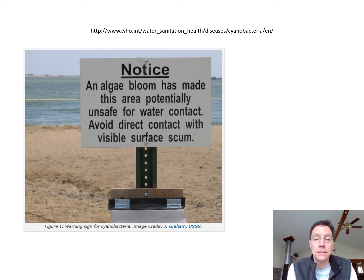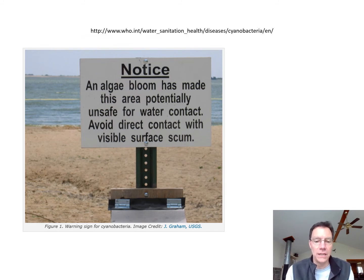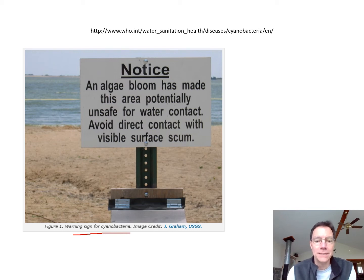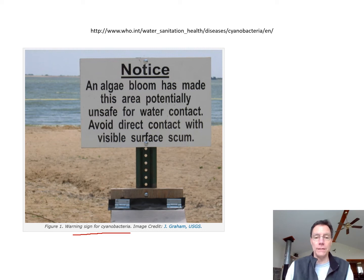Lake Erie is no longer called a dead lake, but it still has a phosphorus legacy problem. Some of the algae growing in the lake are toxic — they give off toxins that can be harmful to humans, causing kidney or liver damage and potentially death. You see signs along Lake Erie warning people not to touch the water, swim in it, or drink it. These are mostly cyanobacteria or relatives of cyanobacteria — not only are they toxic, they're also nitrogen fixers, so they bring in more nutrient and make the problem worse. They're really hard to get rid of once they're in a lake.